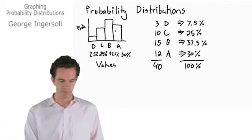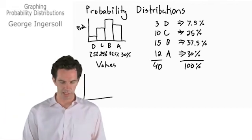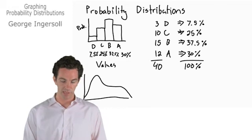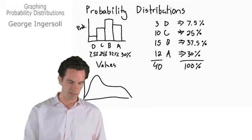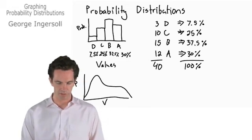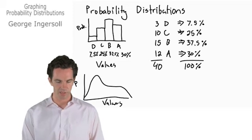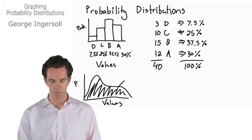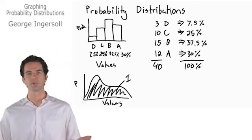We might have a probability distribution that looks like this. The area, so this is our probability over here and this is our values here. The area under the curve is going to be equal to 1, otherwise known as 100 percent.